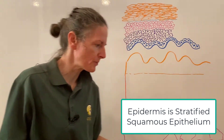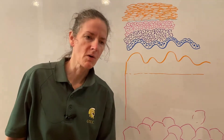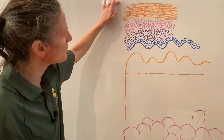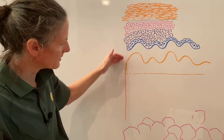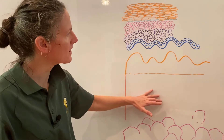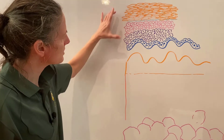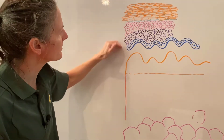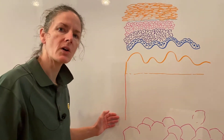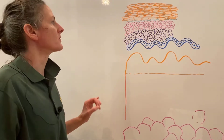You must know that the epidermis is stratified squamous epithelium. The epidermis is a multilayered, stratified squamous epithelium, and the dermis is our connective tissue layer. Together they make the cutaneous membrane. The epidermis has several layers, and the dermis has two main layers. Let's start with the epidermis.